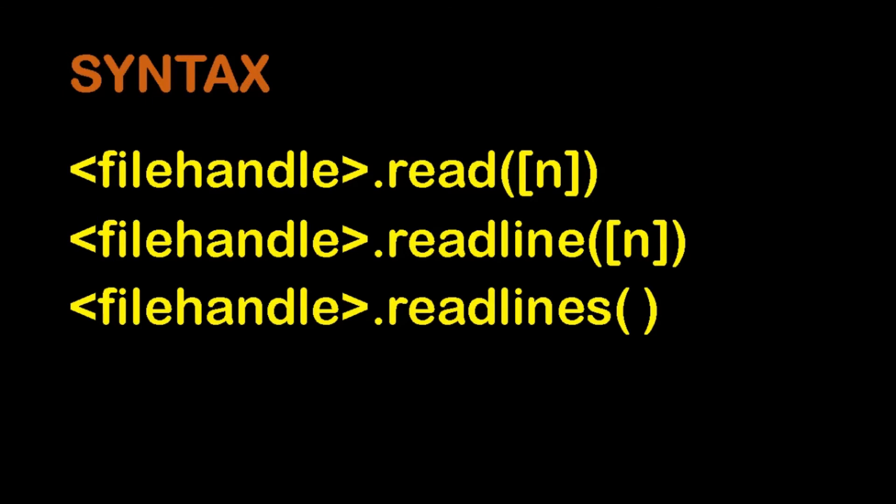If you want to read using the file handle, use file_handle.read(). If you have a bytes value, you can specify the bytes. Next, file_handle.readline() — with empty brackets you can read one line, or you can specify the number of lines. Next, file_handle.readlines() reads the entire file content.